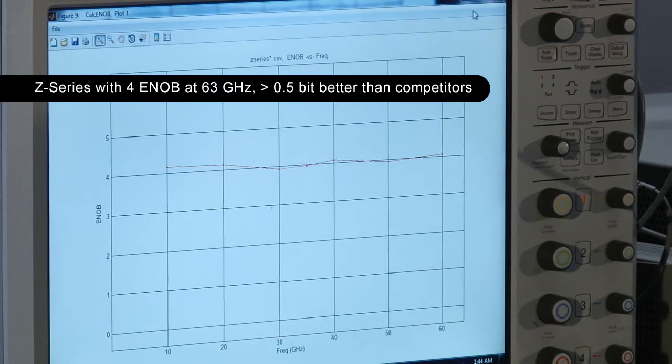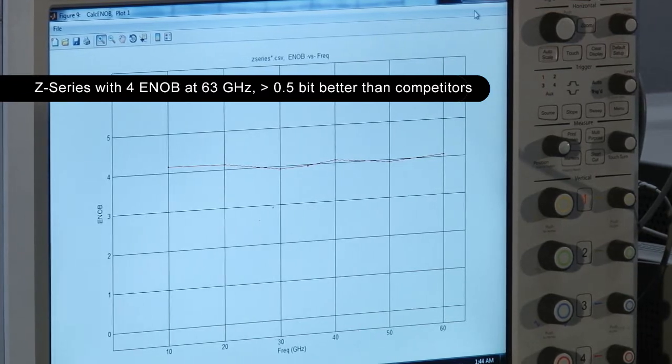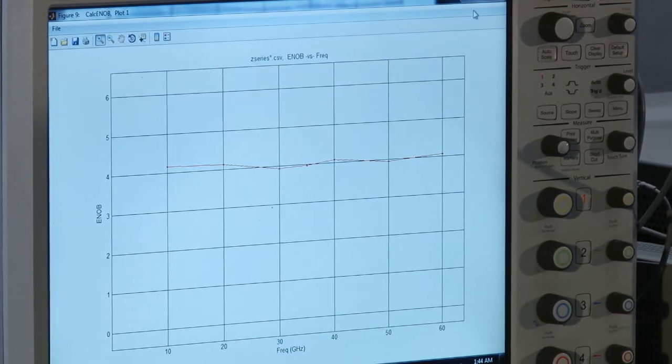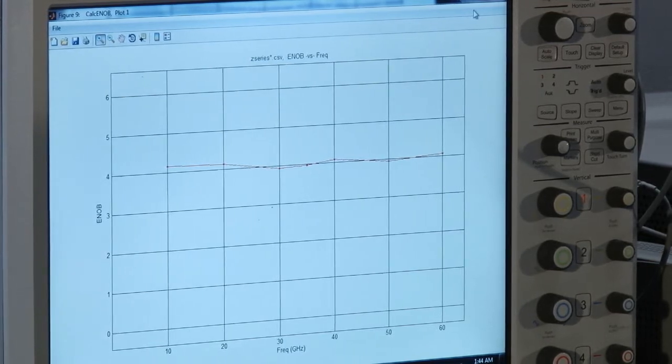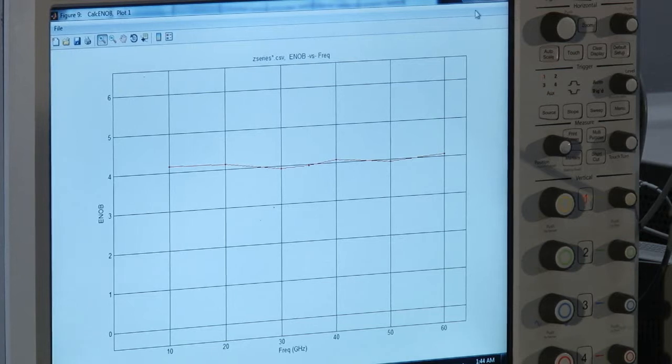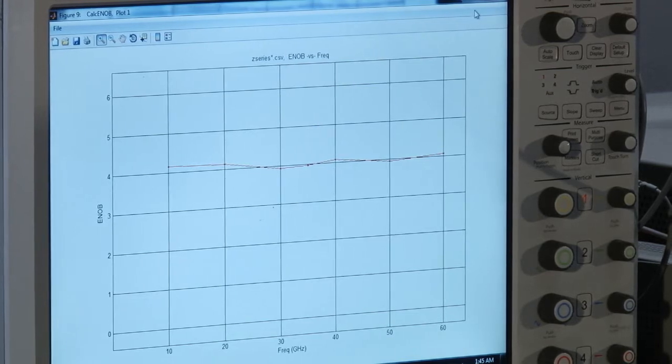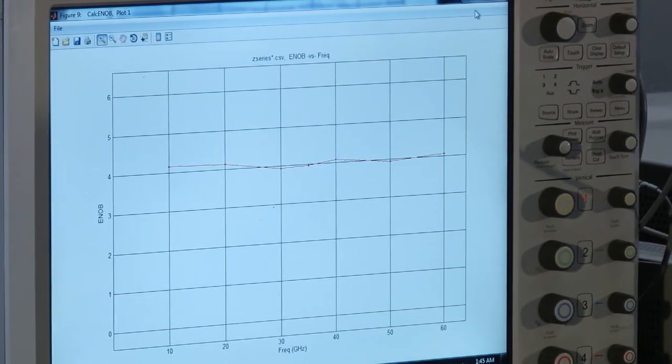This is probably the best you can find in the industry for bandwidth up to 63 GHz. Some of the competitors that we have has about 0.5 dB lower, and that can affect the accuracy of your error vector magnitude measurements for your optical coherent modulation research.